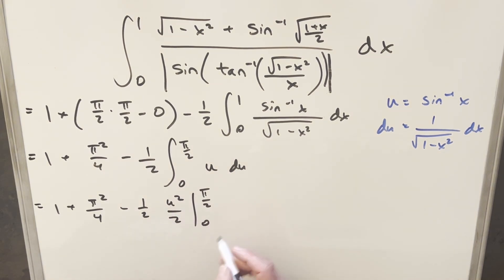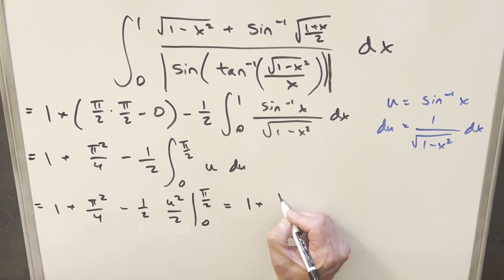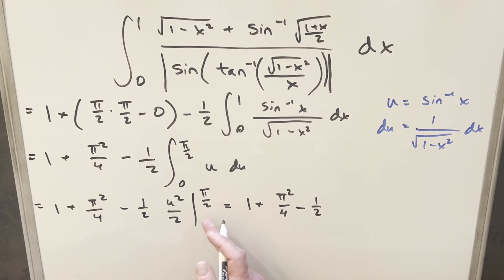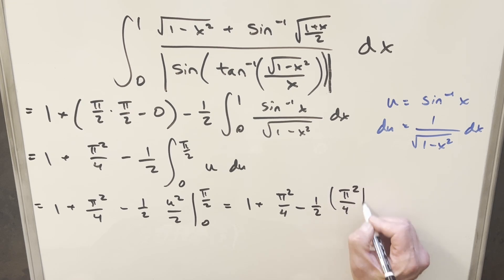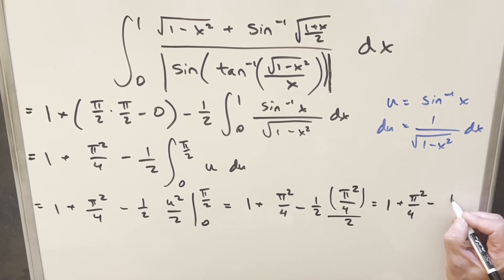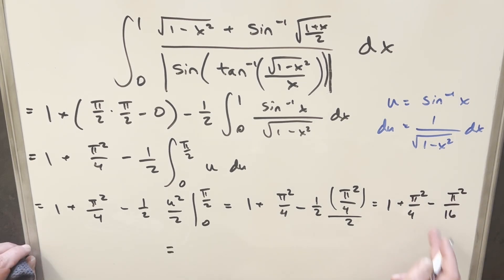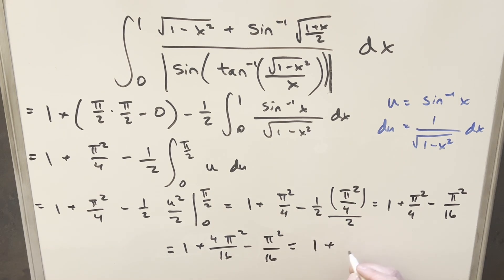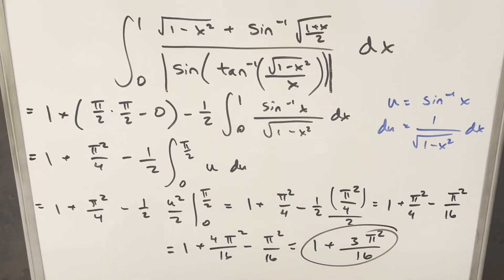Evaluating at 0 gives nothing, so we just plug in π/2: that gives π²/4, still divided by 2, so π²/8. Multiplying by the minus 1/2 out front gives minus π²/16. Getting a common denominator on the π² terms: 4π²/16 - π²/16 = 3π²/16. So the final answer is 1 + 3π²/16. There you have it — a really good problem from UNSW 2020. Thanks everyone for watching!